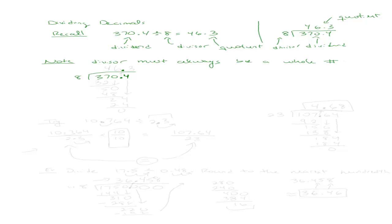Let me show you the role the decimal point is going to play. In this case, it's not going to do anything other than move right up to the quotient. So my quotient is going to have a decimal place in the same spot — that's the only role of the decimal point. Then I just divide the same way I would any other two numbers. I ask myself, how many times does 8 go into 37?